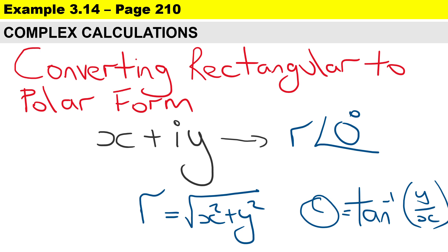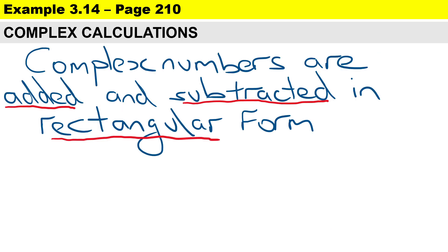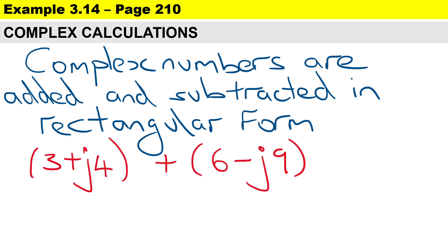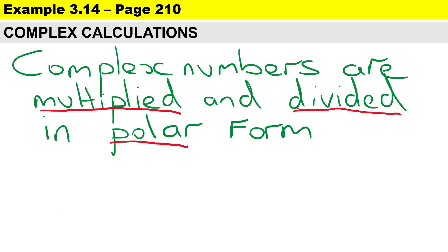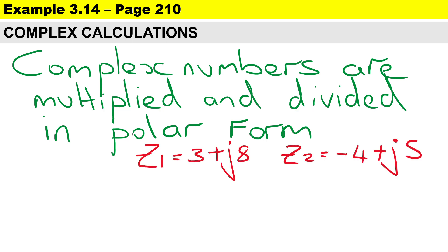As you can see, our calculator saves us a lot of time. Complex numbers are added and subtracted in rectangular form — so 3 plus 6 gives us 9, and positive 4 minus 9 gives us negative 5. Complex numbers are multiplied and divided in polar format.